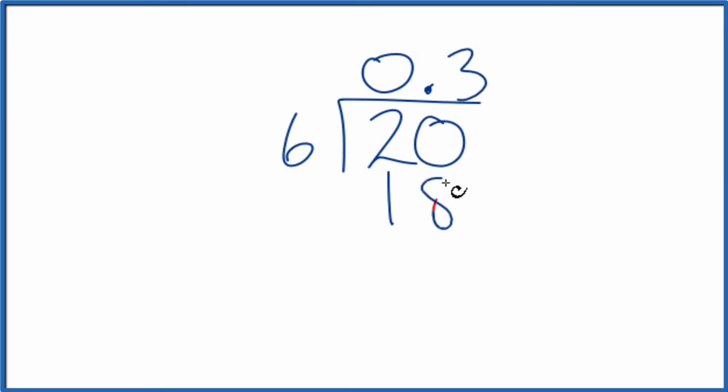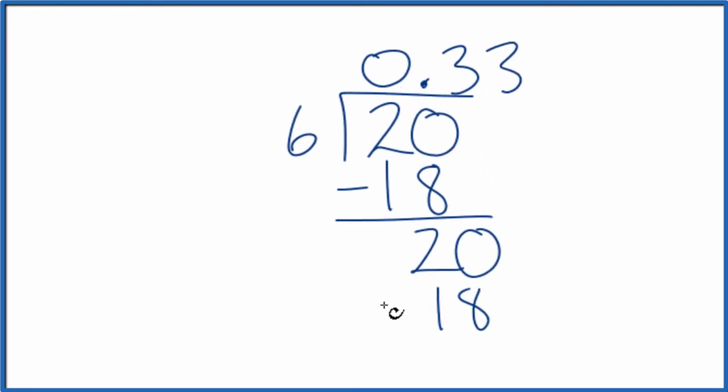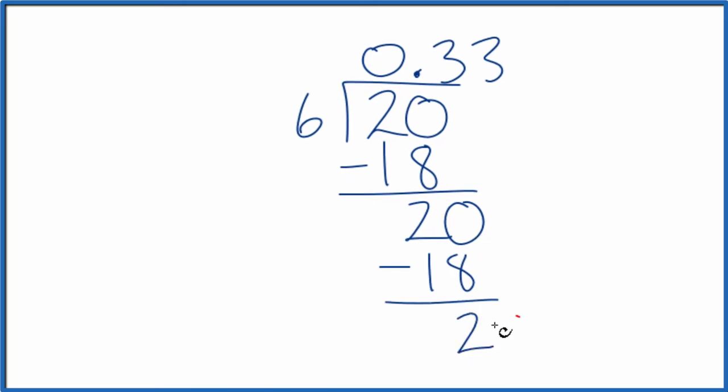3 times 6, that's 18. We subtract, we get 2. So we'll call it 20, move over one decimal place here. 3 times 6, that's 18. We subtract, and we get 2, which we could call 20. And you can see that the 3's,